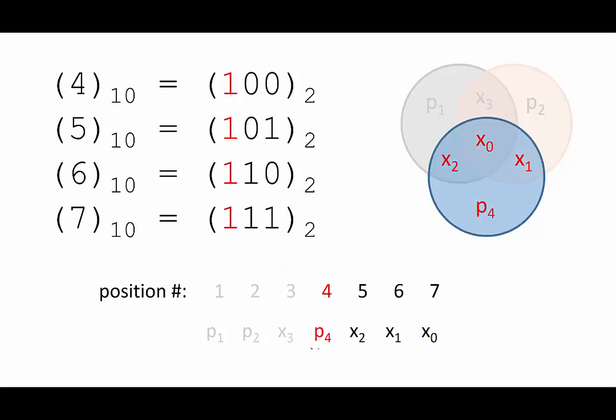Finally, the positions associated with parity bit 4 all have a 1 in the 4's place. Place these bits in the last Venn diagram circle. For example, the message bit in position 5 has a 1 in the 1's and 4's place, and it lies at the intersection of the circles for parity bits 1 and 4.